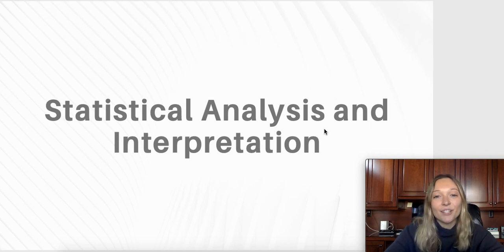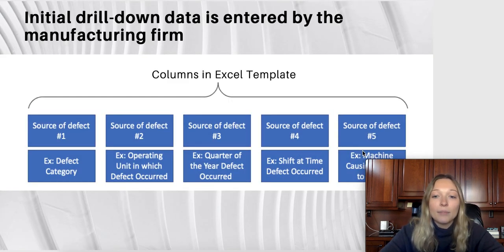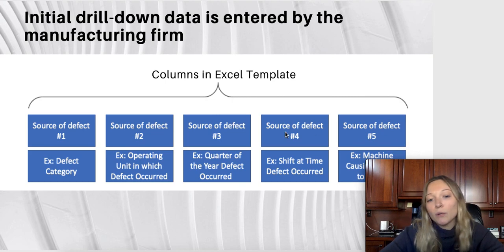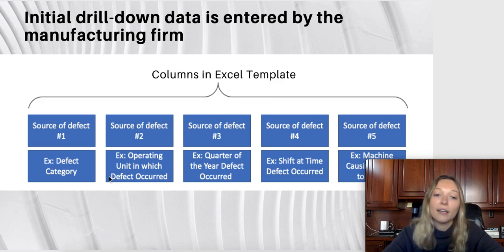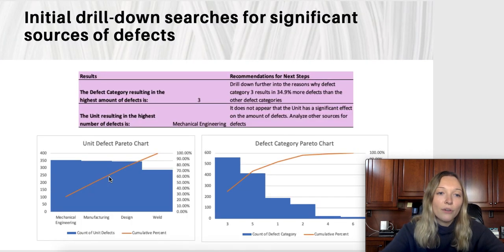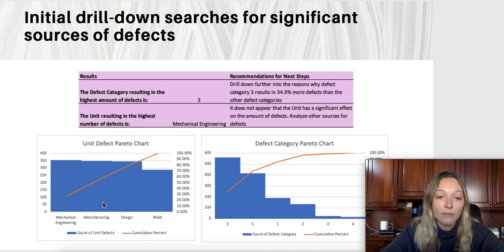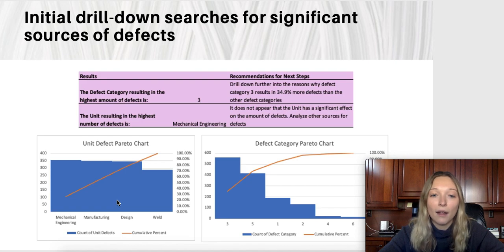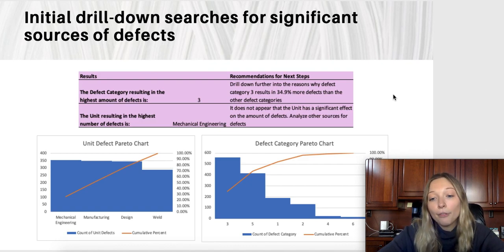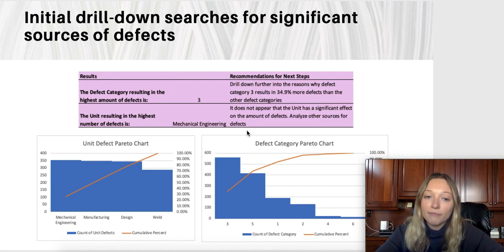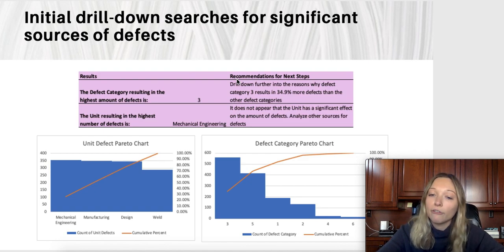Moving to the statistical analysis and interpretation, this is an example of how the initial drill down data would be set up. You would have various sources of defects, and I used two examples: the defect category and the operating unit in which the defect occurred. Using mock data, the unit did not seem to have a big effect, with pretty similar outcomes across units. However, the defect category Pareto chart shows that defect category three resulted in the highest number of defects, and the recommendations for next steps are to drill down further into why defect category three results in more defects.